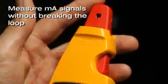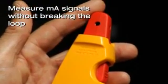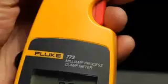Most importantly though, the 773 still gives you the ability to measure milliamp signals without breaking the loop, saving you untold process downtime and money.